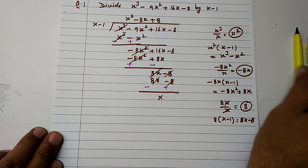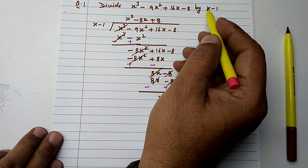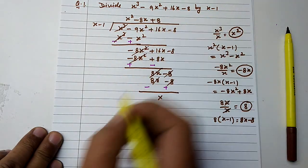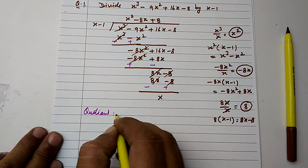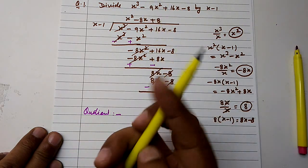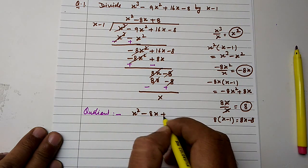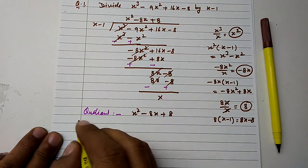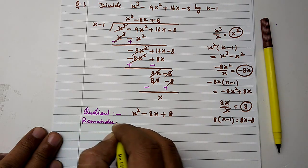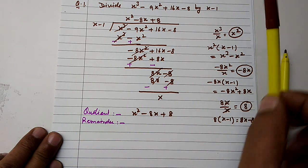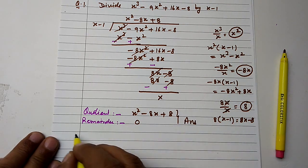So x cubed minus 9x squared plus 16x minus 8 divided by x minus 1 gives quotient x squared minus 8x plus 8 and remainder 0. This is the answer.